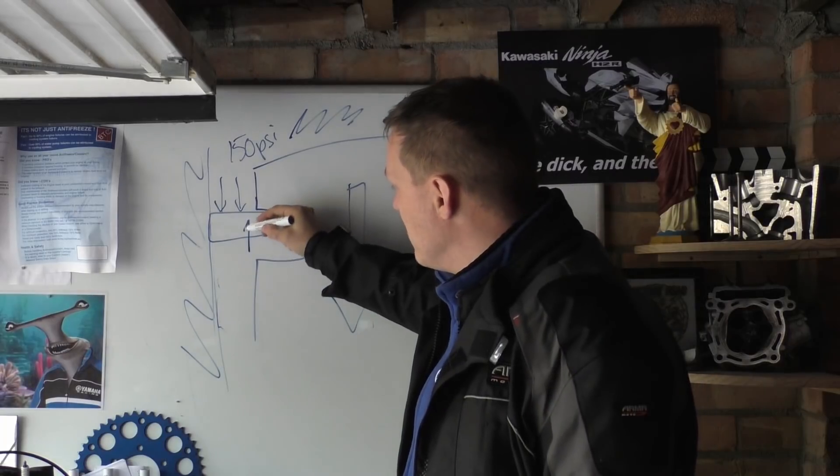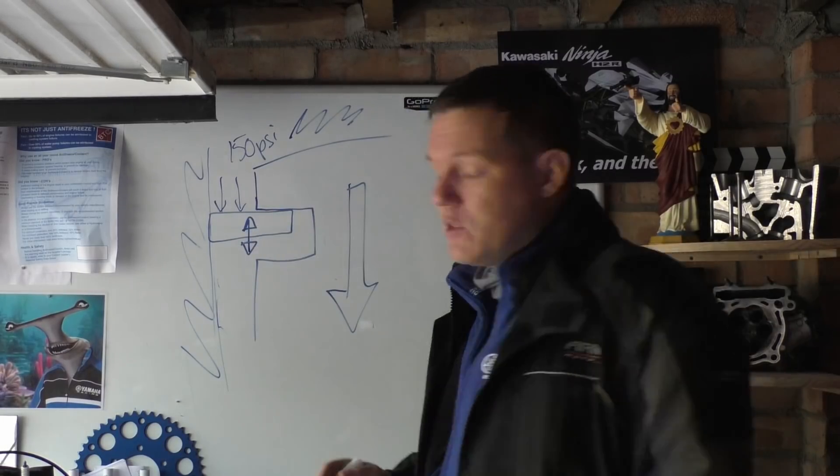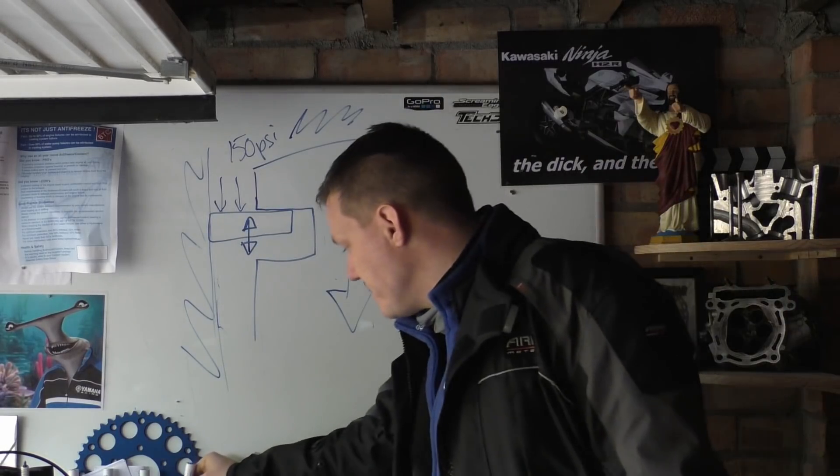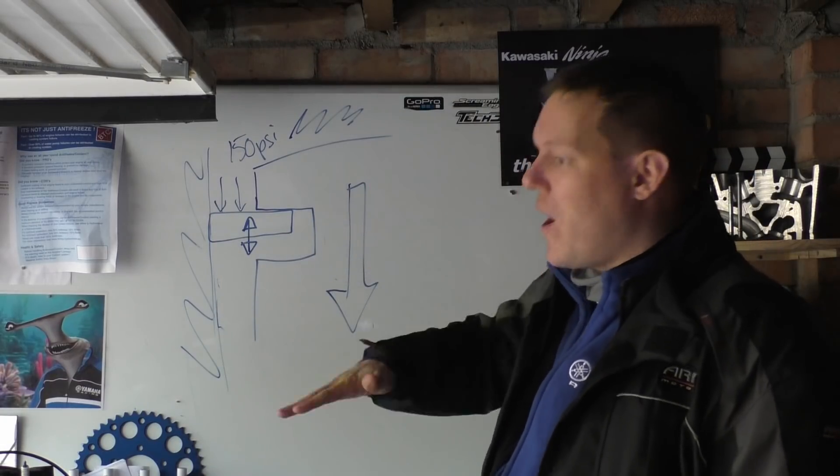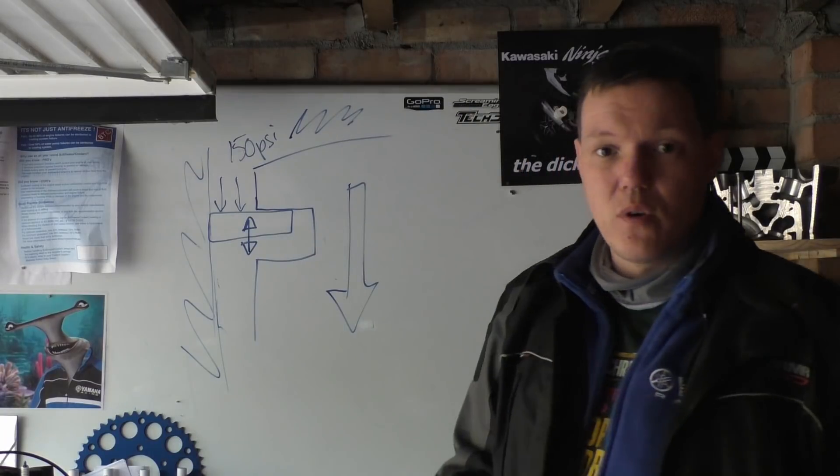Now, this movement up and down is what we call ring flutter. Your ring goes, it basically just starts to whack in, inside this groove backwards and forwards.